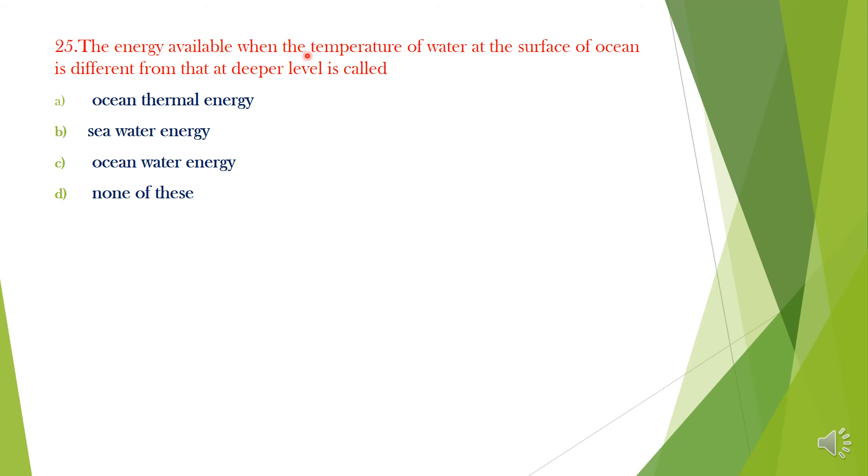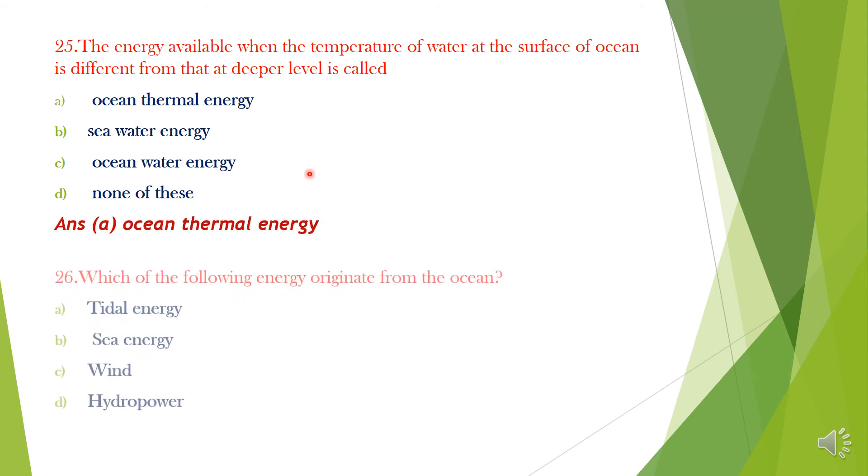Question 25. The energy available when the temperature of water at the surface of ocean is different from that at deeper level is called: A. Ocean thermal energy, B. Seawater energy, C. Ocean water energy, D. None of this. Answer is option A, Ocean thermal energy.